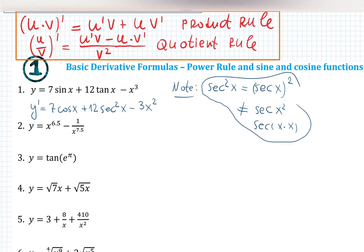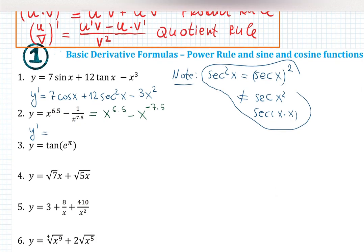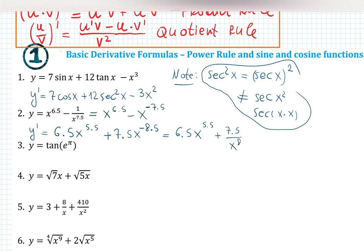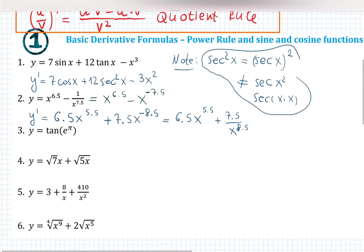The second function I would first rewrite as x to the 6.5 minus x to the negative 7.5, since x was in the denominator we can rewrite it with a negative exponent. y prime will be 6.5 x to the 5.5, and minus times minus gives you plus, so plus 7.5 x to the negative 8.5. Be careful with this. You can also rewrite the negative exponent back to the denominator: 7.5 over x to the 8.5.